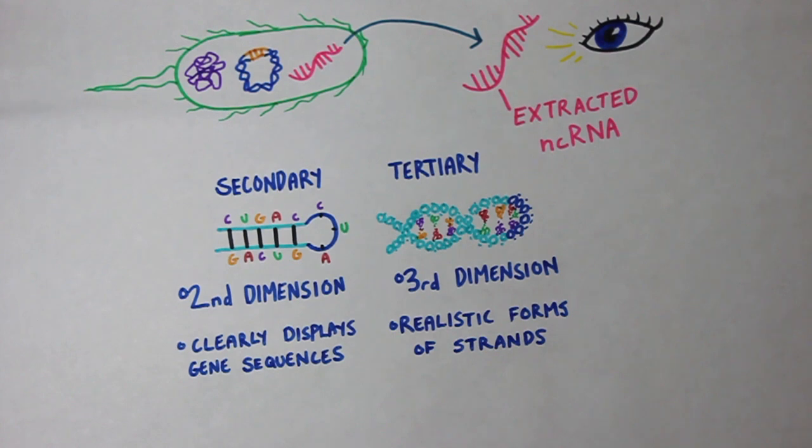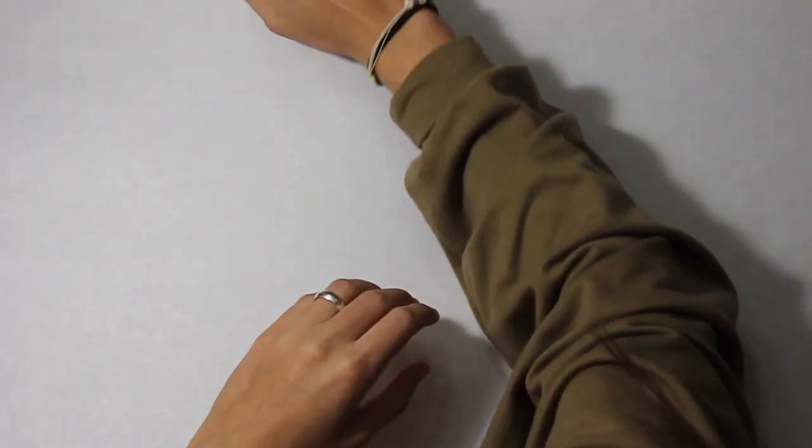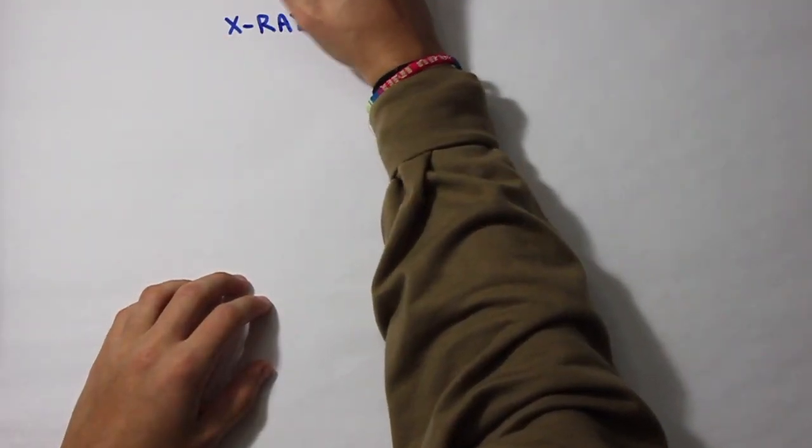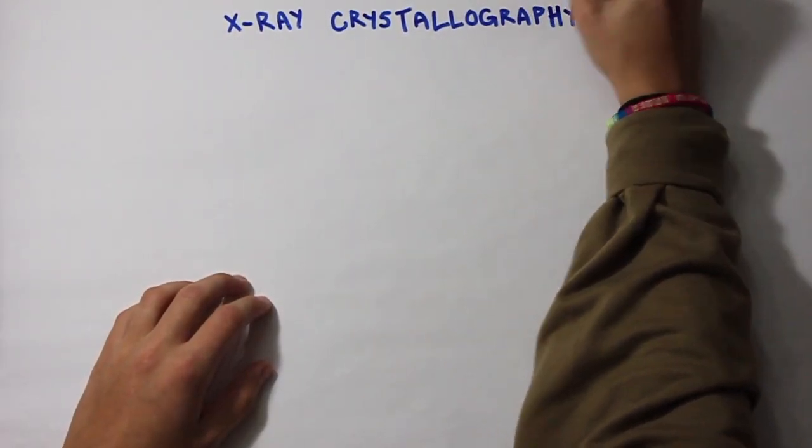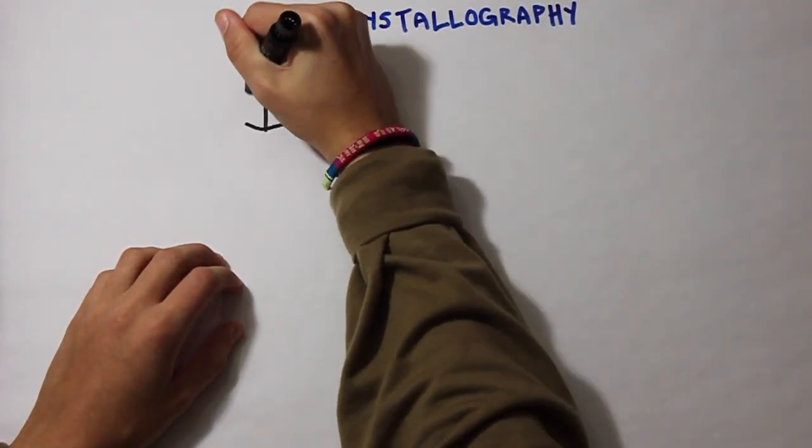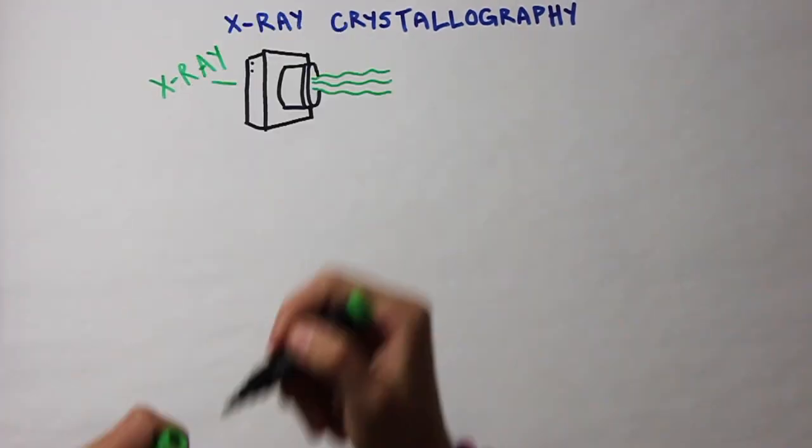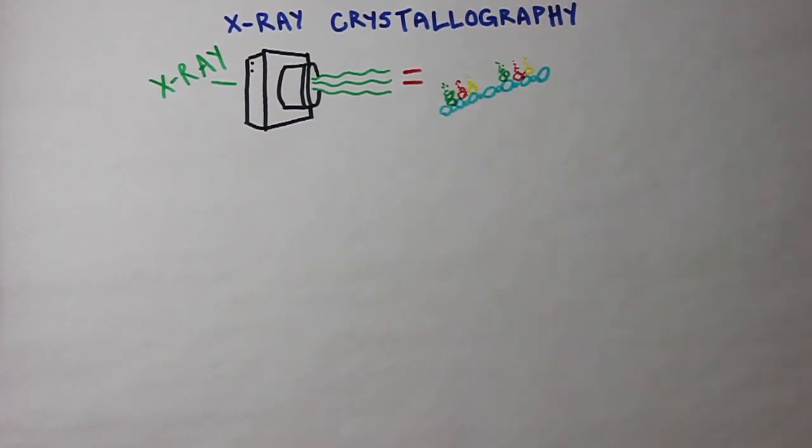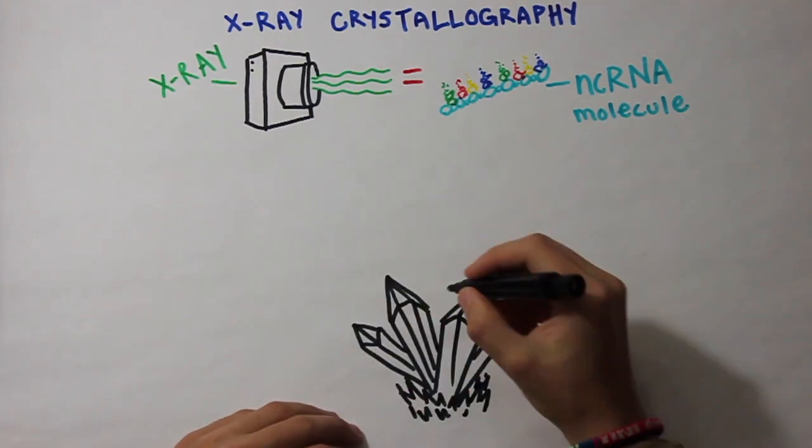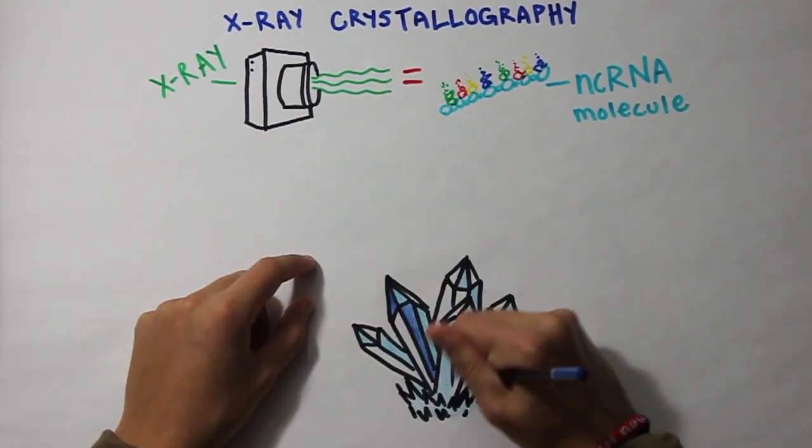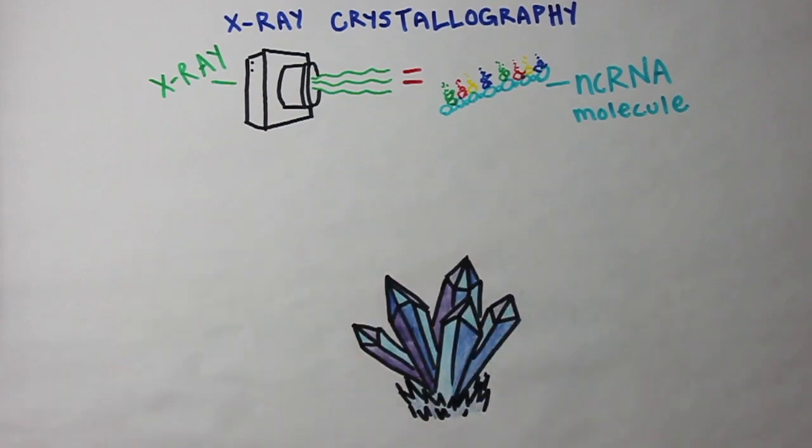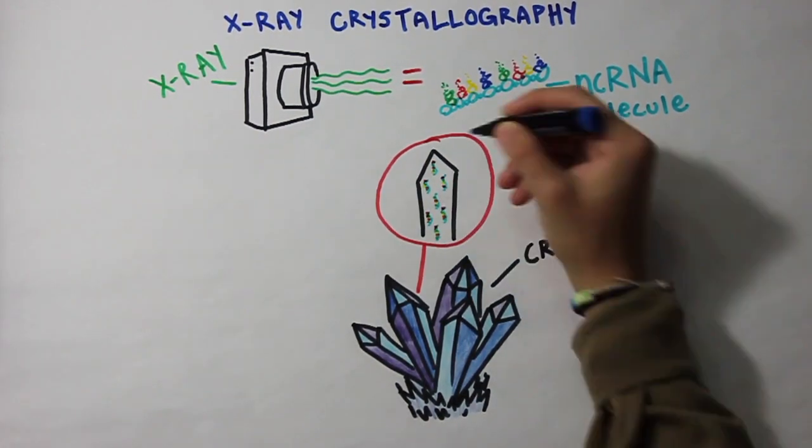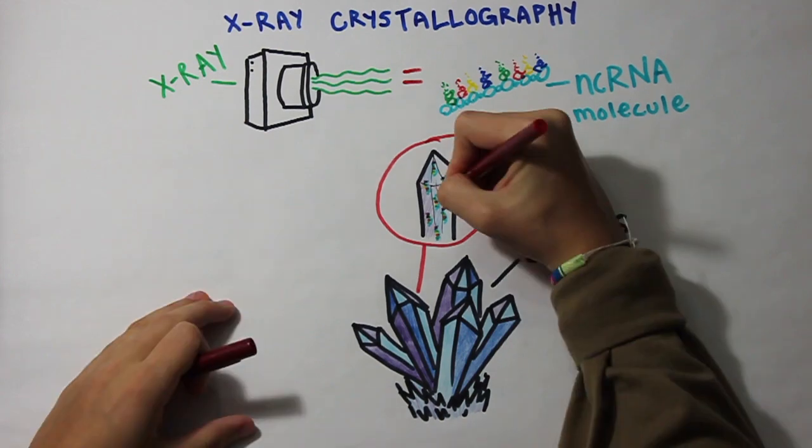After determining the secondary structure through analyzing gene sequences, we can now begin determining the tertiary structure through X-ray crystallography. X-ray crystallography uses X-ray beams to determine the molecular structure of an RNA molecule. The way this works is your non-coding RNA molecules are formed into crystals, which constitute molecules that are tightly packed and aligned uniformly.